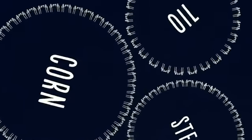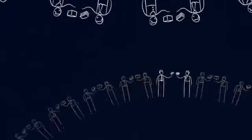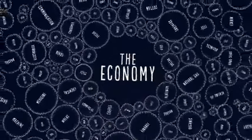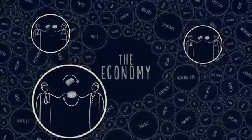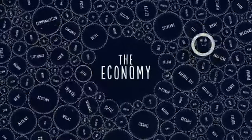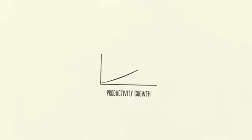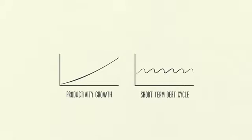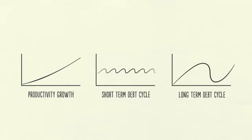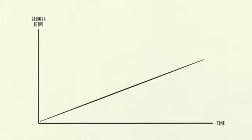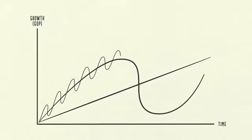Though the economy might seem complex, it works in a simple, mechanical way. It's made up of a few simple parts and a lot of simple transactions that are repeated over and over again a zillion times. These transactions are, above all else, driven by human nature, and they create three main forces that drive the economy: number one, productivity growth; number two, the short-term debt cycle; and number three, the long-term debt cycle. We'll look at these three forces and how laying them on top of each other creates a good template for tracking economic movements and figuring out what's happening now.